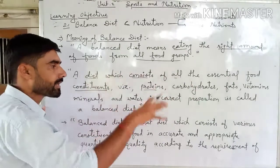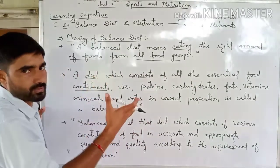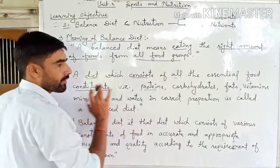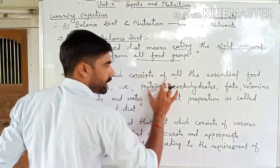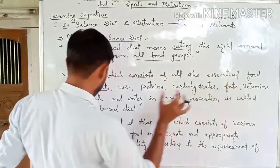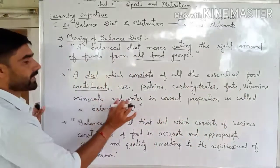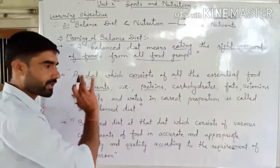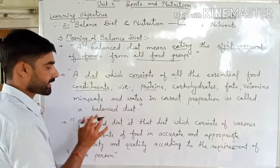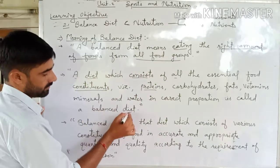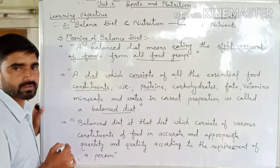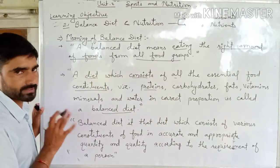So the correct proportion of proteins, carbohydrates, fats, vitamins, minerals, and water in a diet is called a balanced diet.